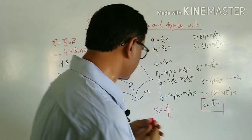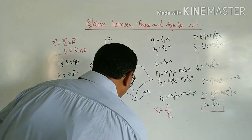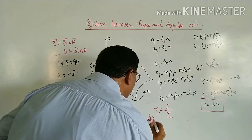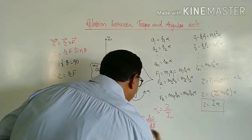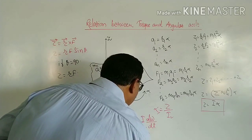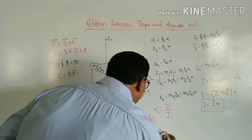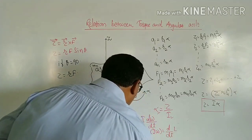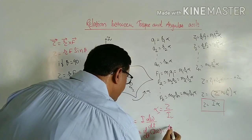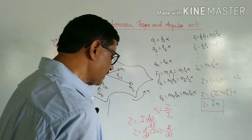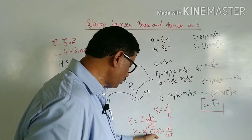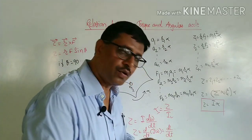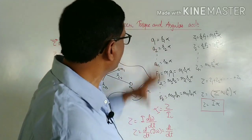Furthermore, torque tau equals I·alpha, which equals I times d-omega/dt, which equals d/dt of (I·omega), and therefore equals d/dt of L. Thus, torque is also defined as the rate of change of angular momentum, since I·omega is the angular momentum L.